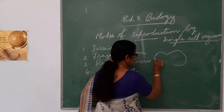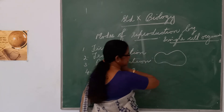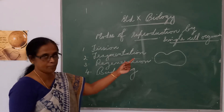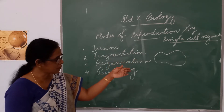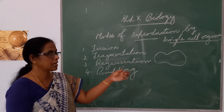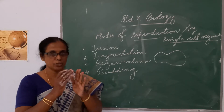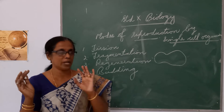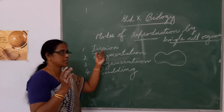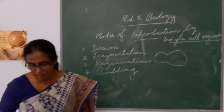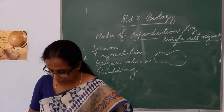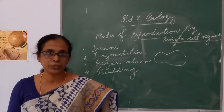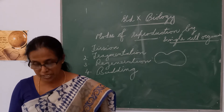In the body of the amoeba, a small shrink appears, then the cytoplasm divides, then the nucleus divides, and two parts are formed. Each one grows into an individual. That process is known as fission. Binary fission means dividing the body into two, and that is usually taking place in amoeba and some unicellular organisms.